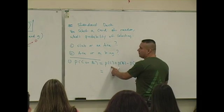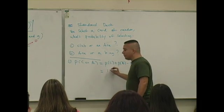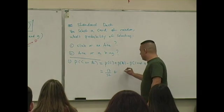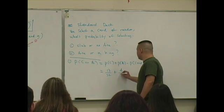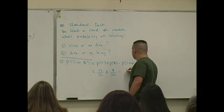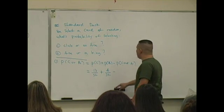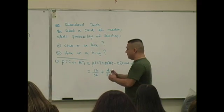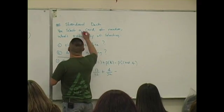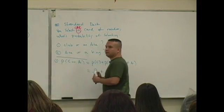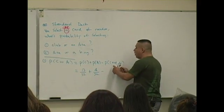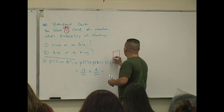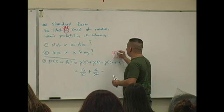What's the probability of selecting a club? Thirteen over fifty-two, plus the probability of selecting an ace, four over fifty-two, minus - what's the probability of selecting a club and an ace? Remember, you're selecting a card, meaning you're selecting one card.